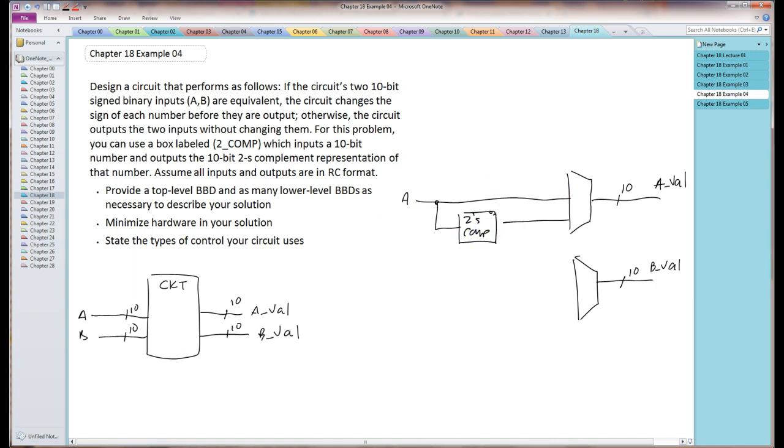The problem is allowing me to use the two's complement box without defining it, so I'm going to take advantage of that. The B input here is going to be very similar. My two's complement input. Let's get some bus widths up here.